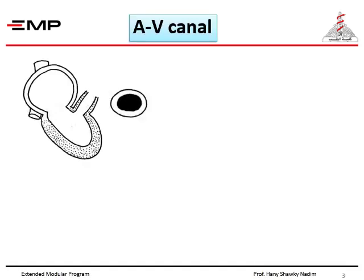Septation of the atria begins with septation of the atrioventricular canal. The atrioventricular canal is the narrow connection that lies between the common atrium and the common ventricle. This is the side view of the heart tube. The common atrium is above the AV canal, then the common ventricle, and this is the bulbous conus. If we have a cross section here, the AV canal appears oval in shape and it's not divided into any chambers.